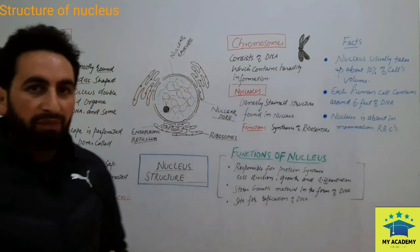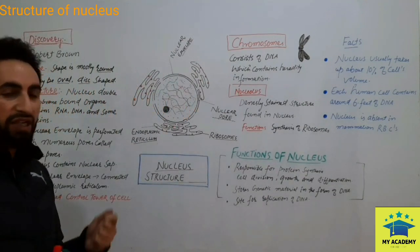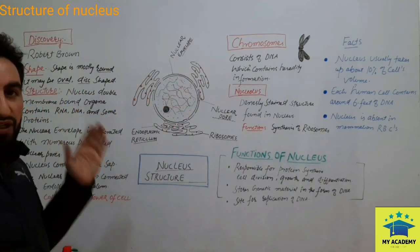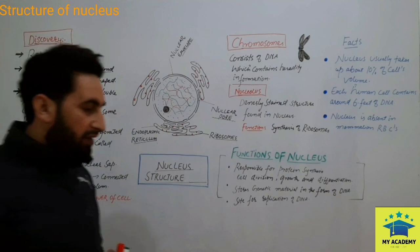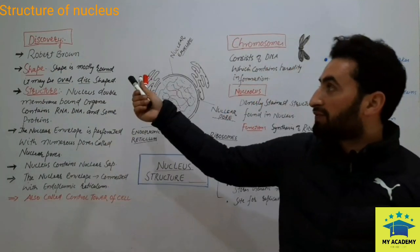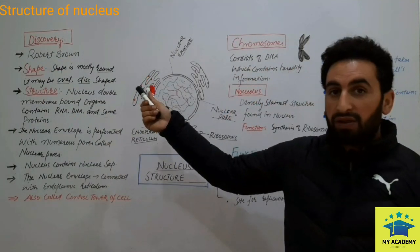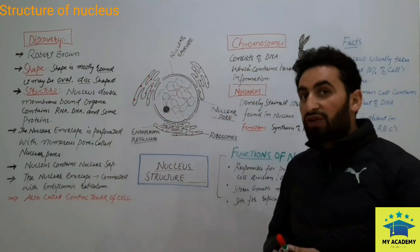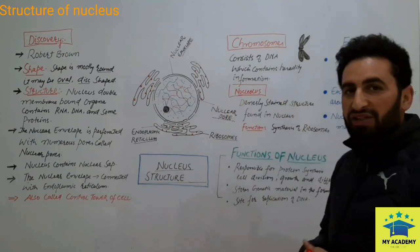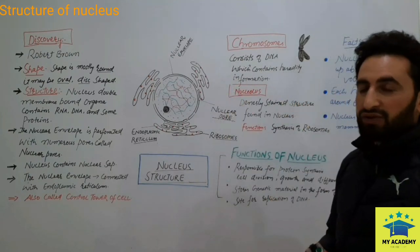First, let's see the historical background. Historically, the nucleus was discovered by Robert Brown. Who discovered the nucleus? That is Robert Brown — he discovered the nucleus.